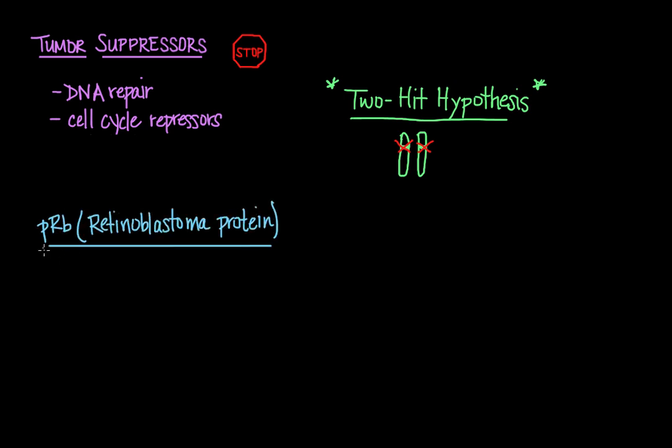The retinoblastoma protein prevents the cell from replicating when its DNA is damaged. And it does this by preventing progression of the cell cycle from G1 into the S phase or synthesis phase. So the retinoblastoma protein binds and inhibits transcription factors, which normally push the cell into the S phase. And this complex acts as a growth suppressor, and so the cell remains in the G1 phase.